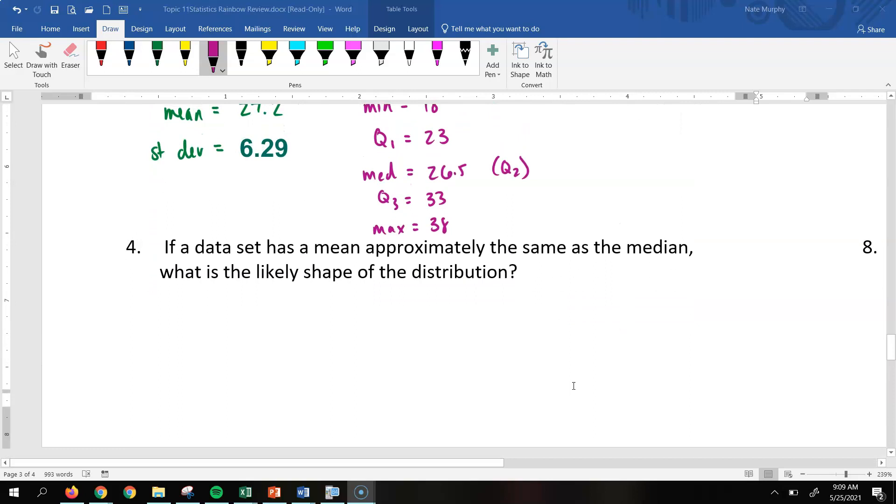All right, let's look at number four. It says, if a data set has a mean approximately the same as the median, what is likely the shape of the distribution? Well, that means that it's going to be symmetrical. So if the mean and the median are approximately the same, it's going to be a symmetrical set of data.